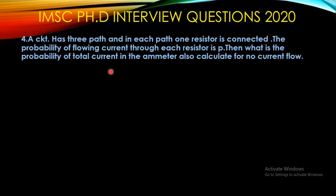Another question: there was a circuit with three paths, and in each path one resistor is connected. The probability of current flowing through each resistor is given as P. They asked what is the probability of total current in the ammeter, and also to calculate the probability of no current flowing through the circuit. This question was also asked in some previous year JNCSR papers.